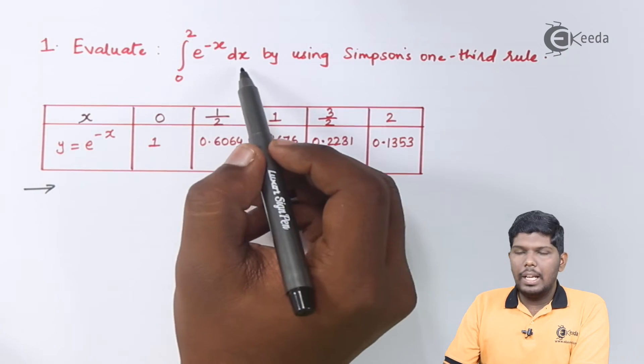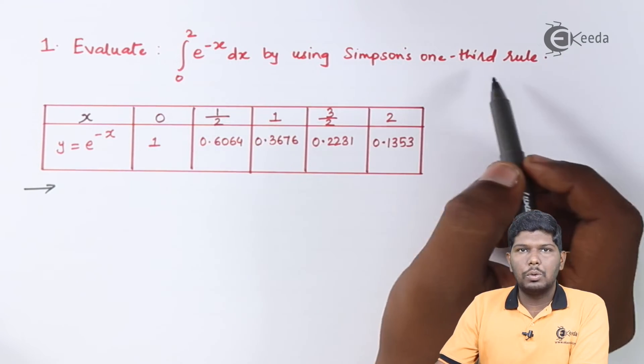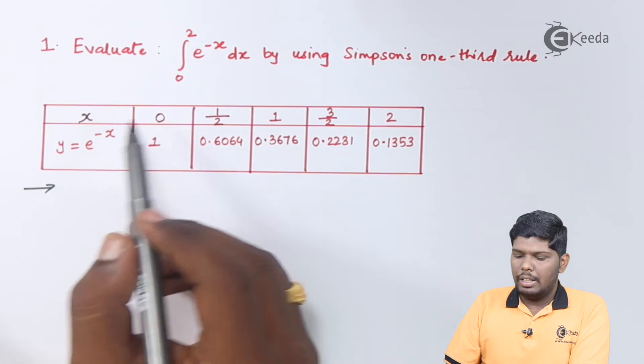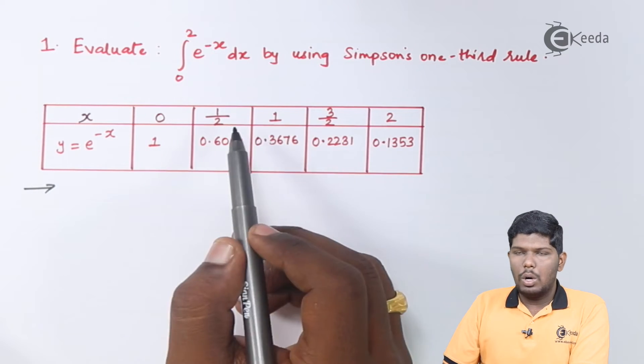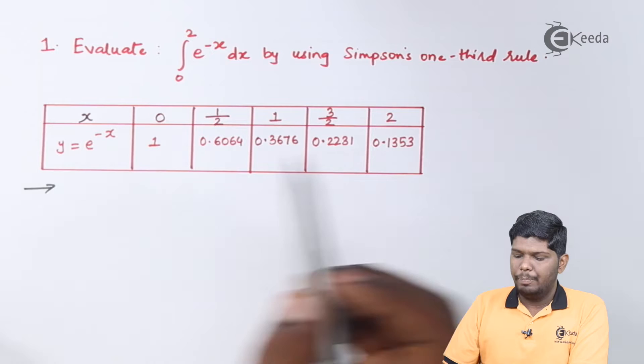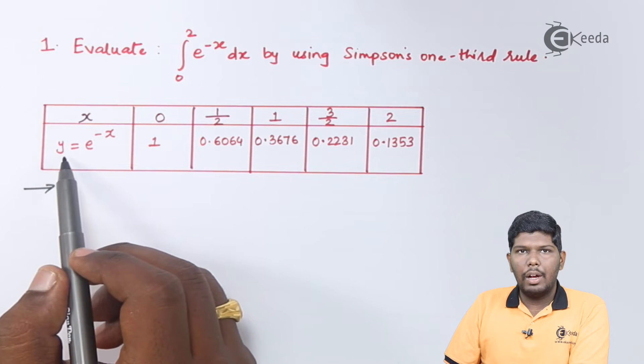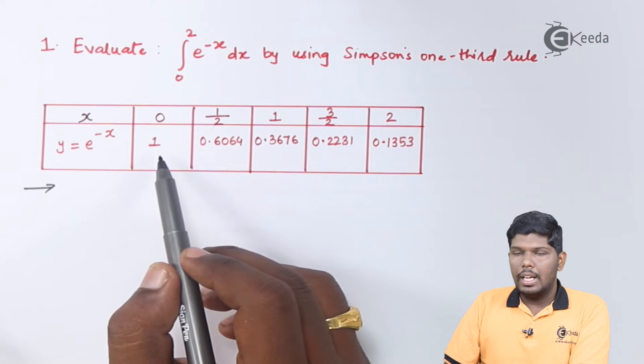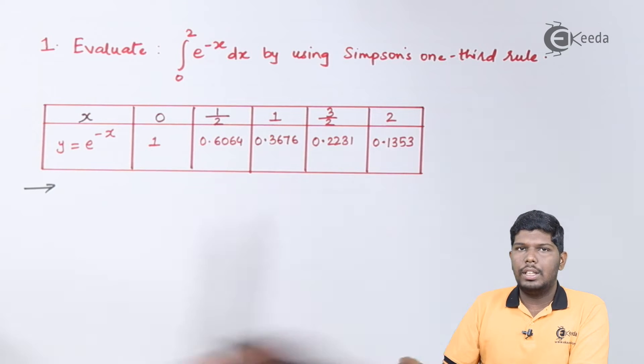Evaluate 0 to 2 e^(-x) dx by using Simpson's one-third rule, given that the values of x are 0, half, 1, 3/2, and 2, and for that the values of y or the given function e^(-x) are given from 1 to 0.1353.